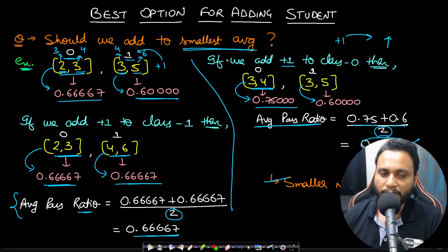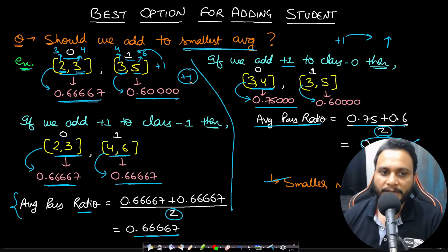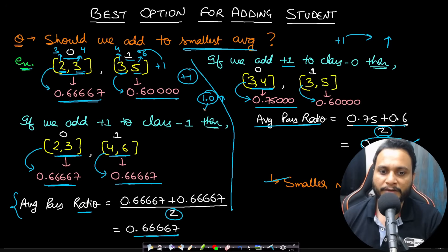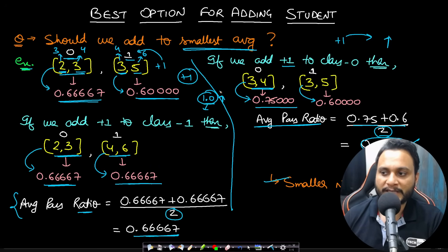The reason this fails is that average is not the only criterion — class size also matters. Adding +1 to a smaller class causes higher fluctuation in the pass ratio than adding to a larger class. Additionally, classes farther from a ratio of 1.0 gain more from an extra student than those already close to 100% pass rate.